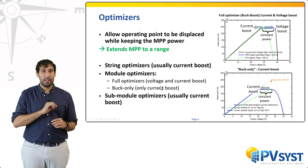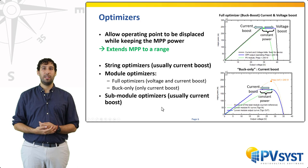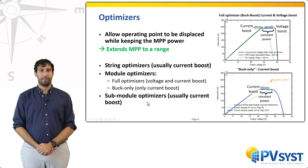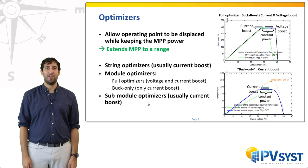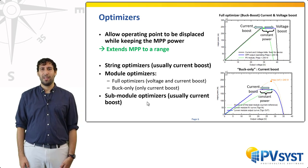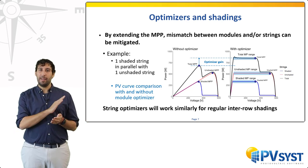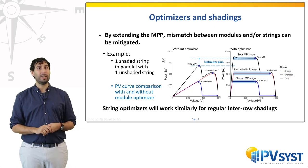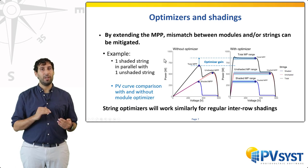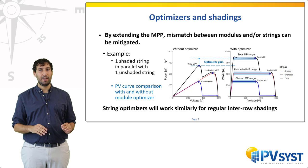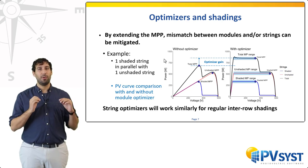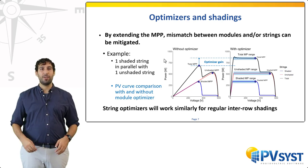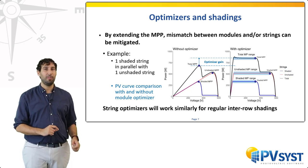Finally, sub-module optimizers are integrated in the module design. Natively, there will be three optimizers in parallel per module, and they lessen the necessity of using bypass diodes. It is easy to understand how optimizers improve production in the context of shadings. By extending the MPP to maximum power ranges, it is easier to find an operating point that fits all maximum powers of the individual components. In our earlier example of two strings in parallel, one shaded and one unshaded, one can see that using module optimizers, there is now a range of voltages that allows for the maximum power to be the sum of both individual maximum powers. You could reach the same results with string optimizers, and slightly better with sub-module optimizers.